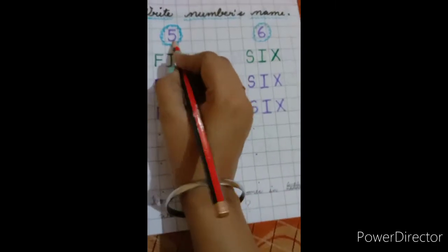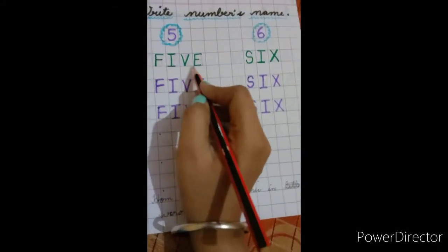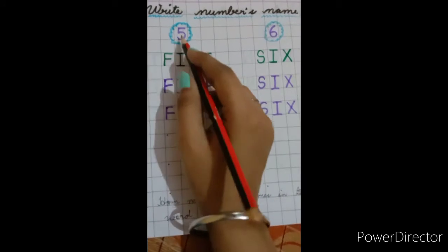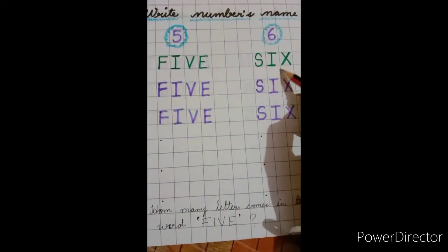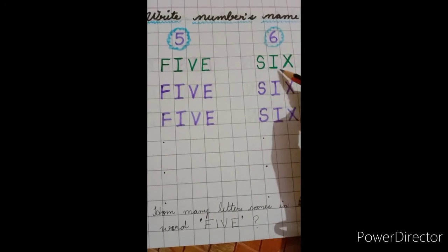Five: F-I-V-E, five, okay? F-I-V-E, five. Then S-I-X, six. S-I-X, six, okay.